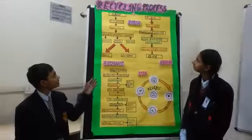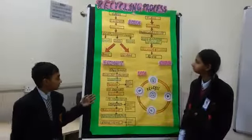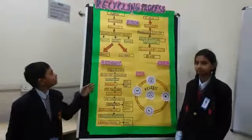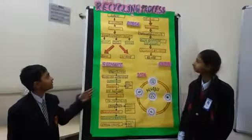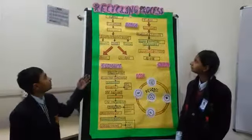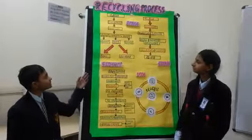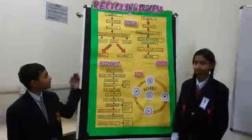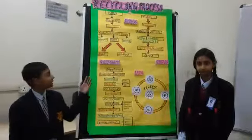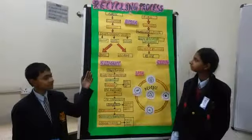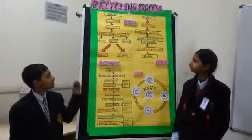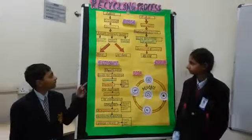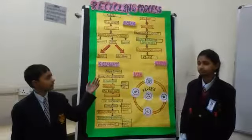Here we can see on the chart there are three flowcharts showing three different processes used in different countries for recycling the e-waste. In the first flowchart, we can see the e-waste is first collected, then the logistics is done, then the sorting by the process of refurbishment, separation and grading is done. After separation, some materials are recycled and then further classified into viable and non-viable materials.